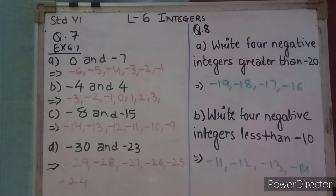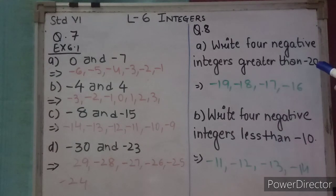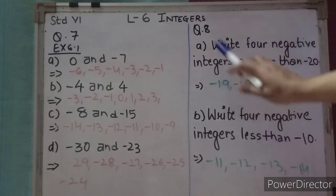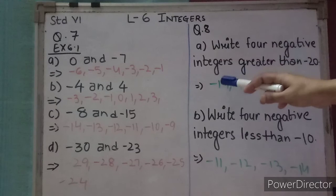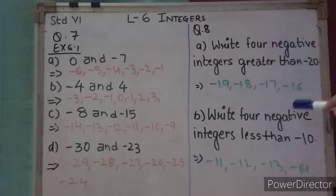Question number 8: Write 4 negative integers greater than minus 20. We have to write integers which are greater than minus 20. In negative numbers, as the integer gets bigger in value, its actual value is lower. Minus 20 is smaller than minus 19. So 4 negative integers greater than minus 20 are: minus 19, minus 18, minus 17, minus 16.